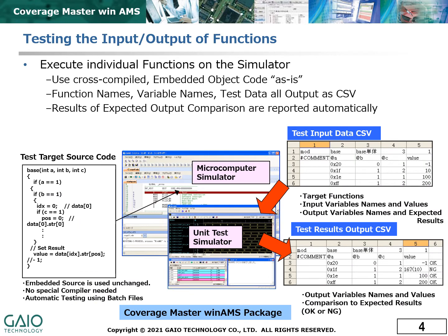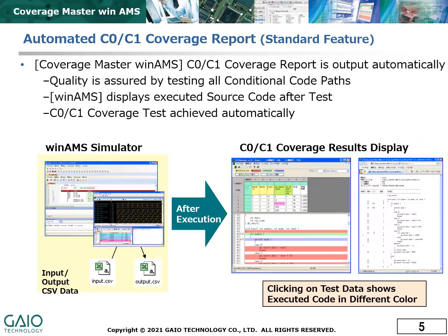Each function within the source code is tested to confirm the expected output values for specified input values, which are selected according to the branch conditions within the function. Measurement of coverage levels C0 and C1 can be completely automated, and the resulting coverage can be shown on a line-by-line basis.